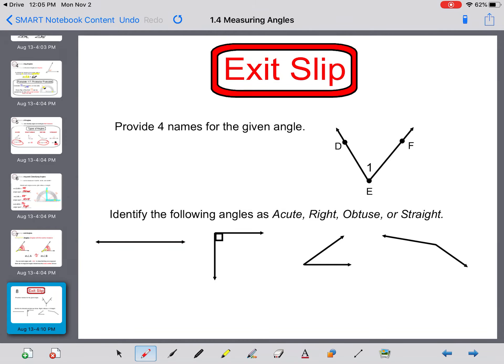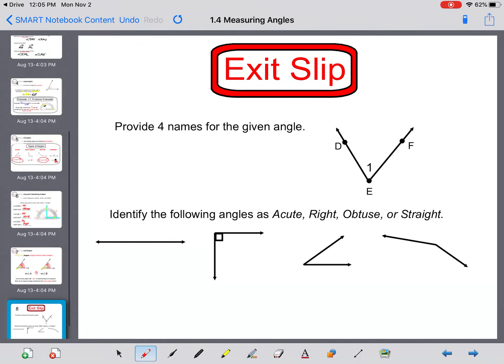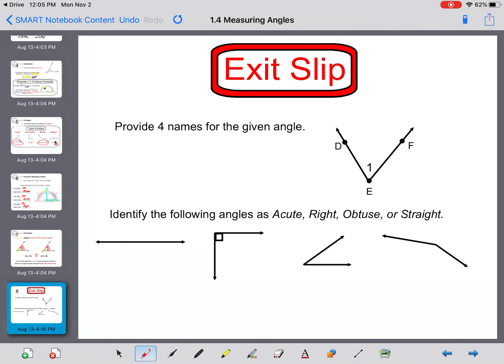Alright, your exit slip. It says provide four names for the given angle. And then on the bottom, they ask you to identify the following angles as acute, right, obtuse, or straight. I look forward to seeing those responses when you submit your work. Thank you for watching.